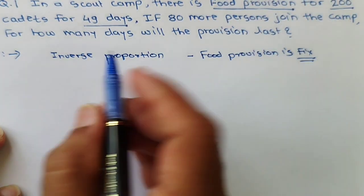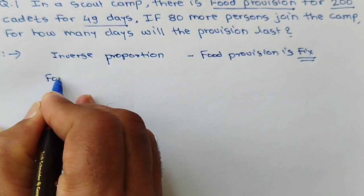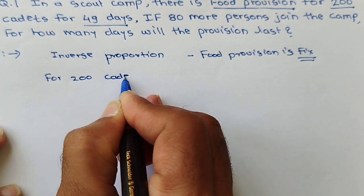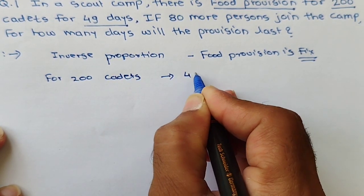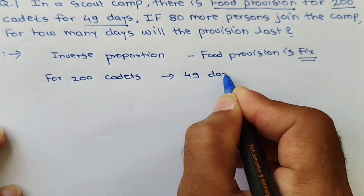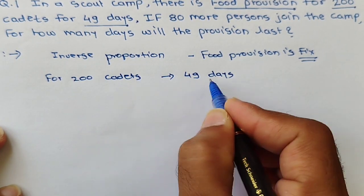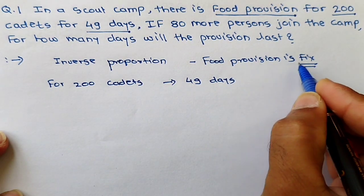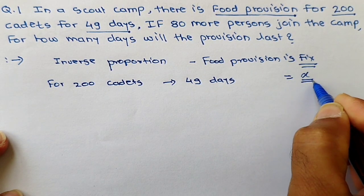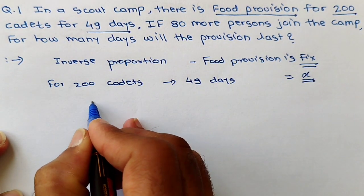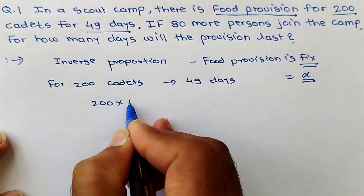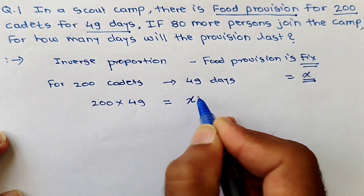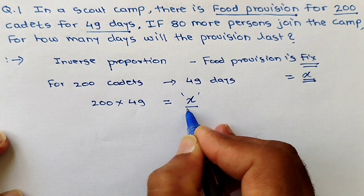What is given? For 200 cadets, full provision lasts for 49 days. If we consider the full provision as fixed quantity x, then 200 into 49 equals x. That is the fixed quantity.